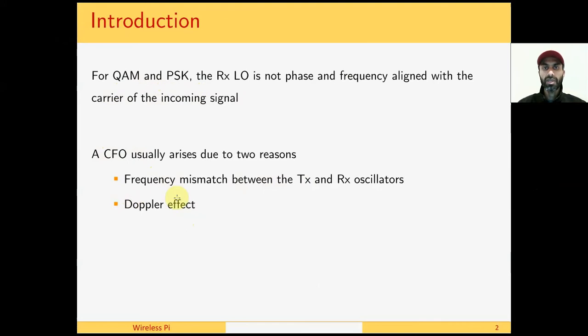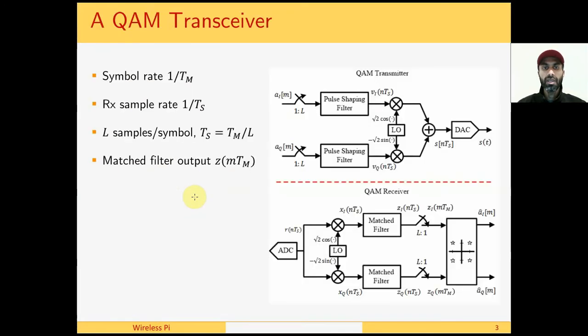We will discuss the Doppler effect later during the wireless channel. This is a block diagram of a QAM transmitter and receiver for a quick overview. The data symbols are upsampled before pulse shaping and then upconverted through the local oscillator and sent on the wireless channel. At the receiver they are downconverted before match filtering and then downsampled to one sample per symbol before mapping onto the receiver constellation. Let us see how carrier frequency offset affects this process.